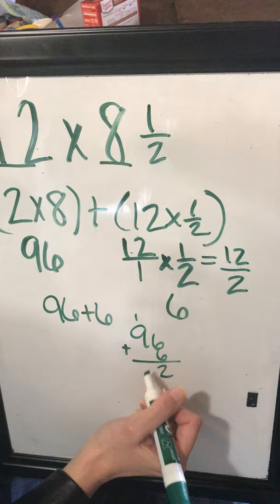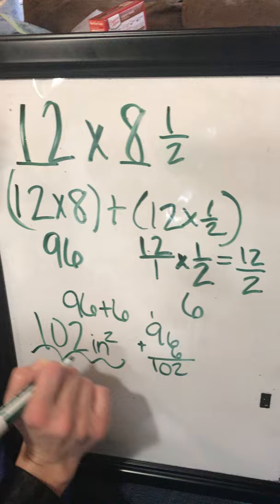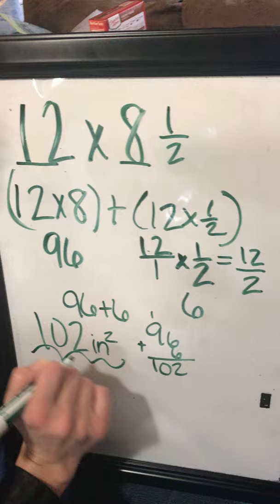We end up with 102. Since we found the area, it's going to be square inches, so 102 square inches is the area of my canvas.